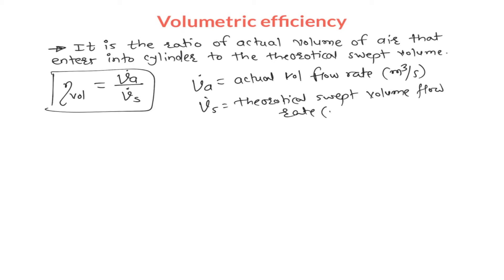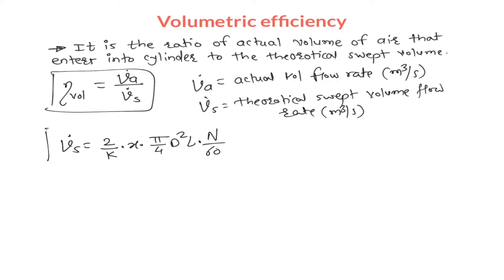This theoretical swept volume flow rate is in meter cube per second. In the previous lecture we have seen this theoretical swept volume flow rate and the formula for it: Vs equals 2 divided by k, multiplied by x, into pi by 4, d squared, l, into n by 60. If you have not seen my previous lecture, go and watch that lecture on theoretical swept volume flow rate and then come here.